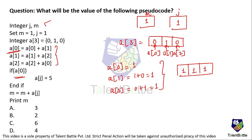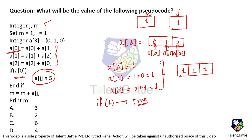Now checking the condition: if a[0] is 1, that is a positive number, so the if condition is true. In that case a[j] equals 5, and since j equals 1, a[1] becomes 5. Then m is calculated as m plus a[1], which is 1 plus 5 equals 6. So option C is the final answer for this question.